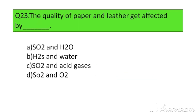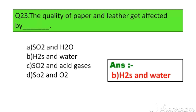Question number 23. The quality of paper and leather get affected by: Option A. SO2 and H2O, B. H2S and water, C. SO2 and acid gases, D. SO2 and O2. The right answer is Option B: H2S and water.